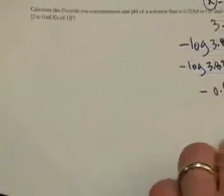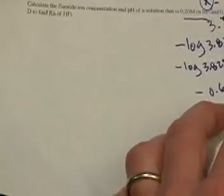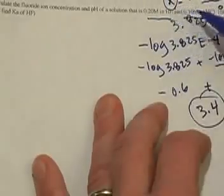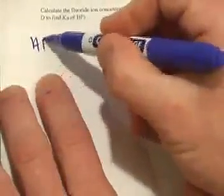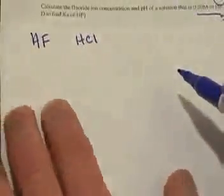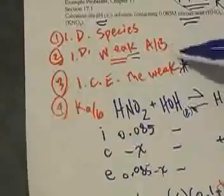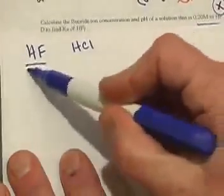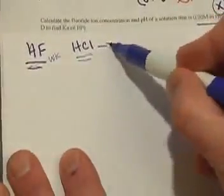The second problem: calculate the fluoride ion concentration and pH of a solution that is 0.2 M in HF and 0.1 M in HCl. We have a weak acid HF and a strong acid HCl. Step one: identify species — HF and HCl are both in solution. Step two: identify the weak species. HF is the weak acid. HCl is strong, so it completely dissociates to give 0.1 M H+ and 0.1 M Cl-.